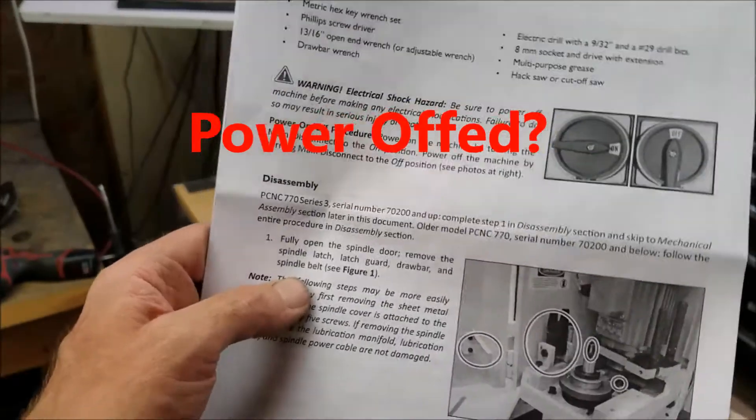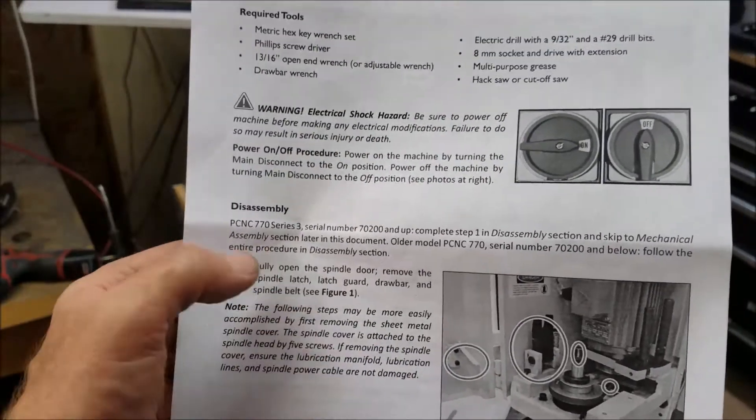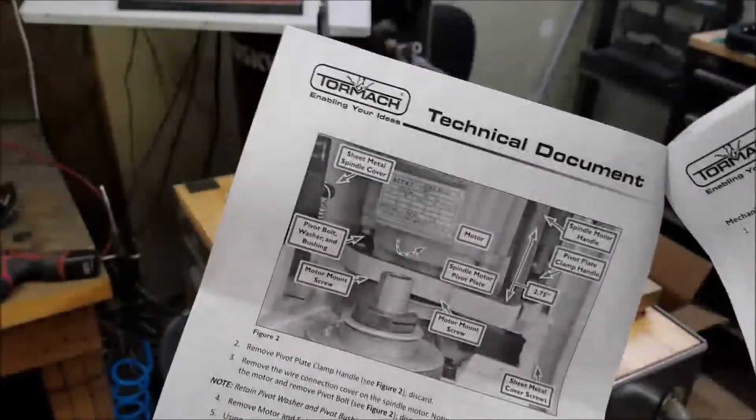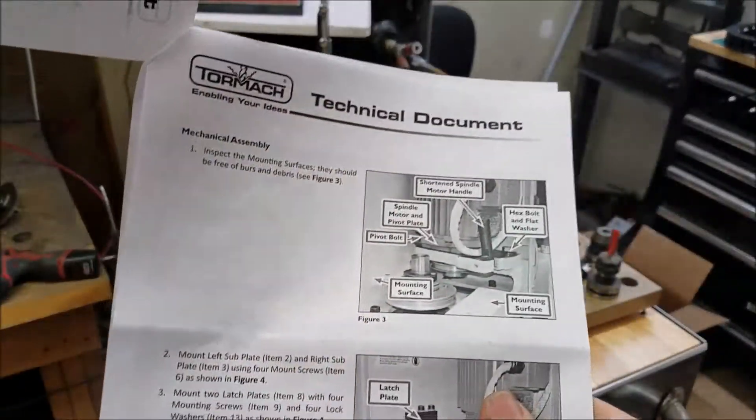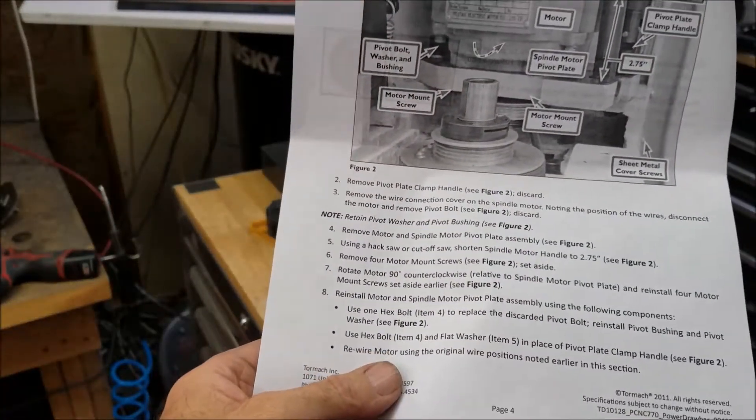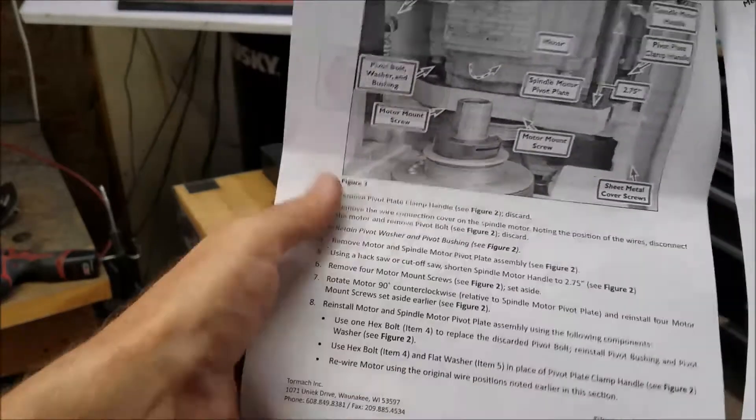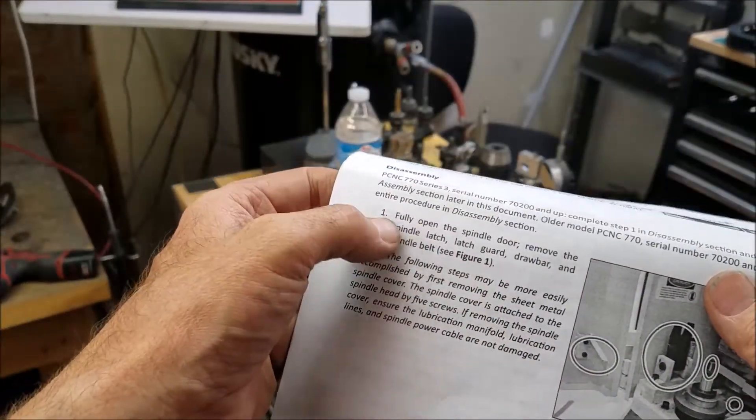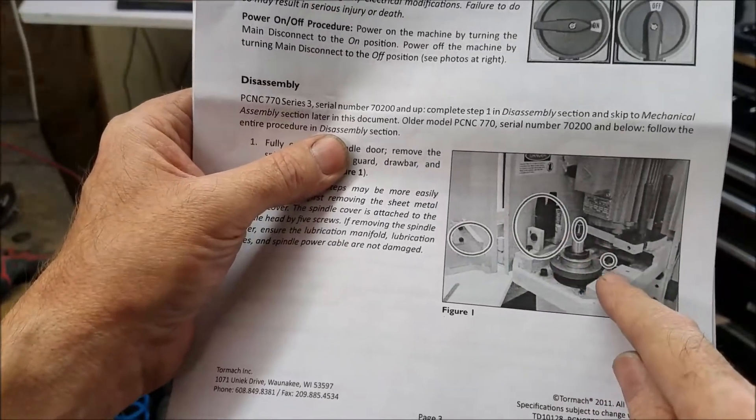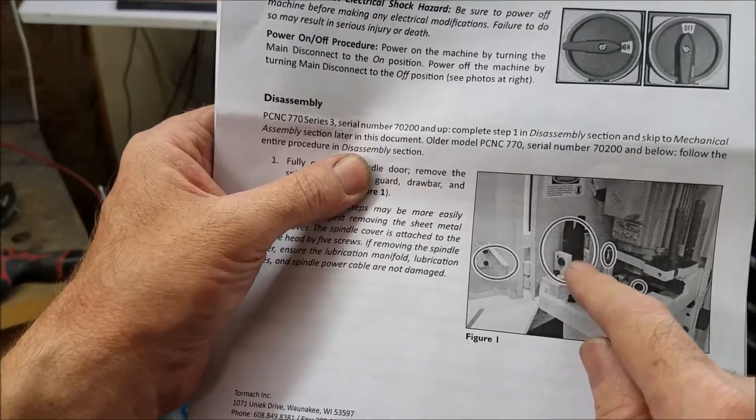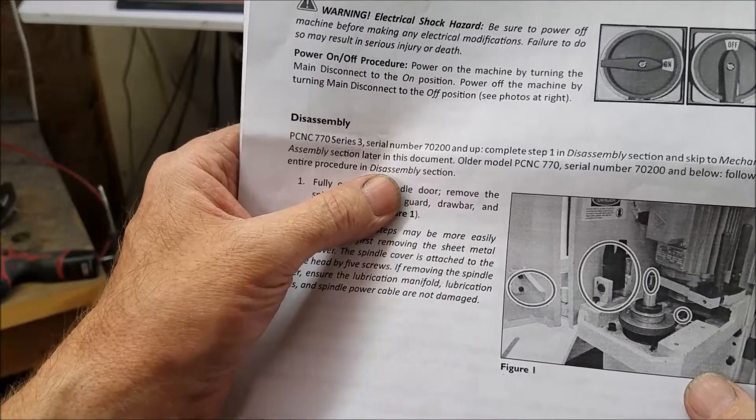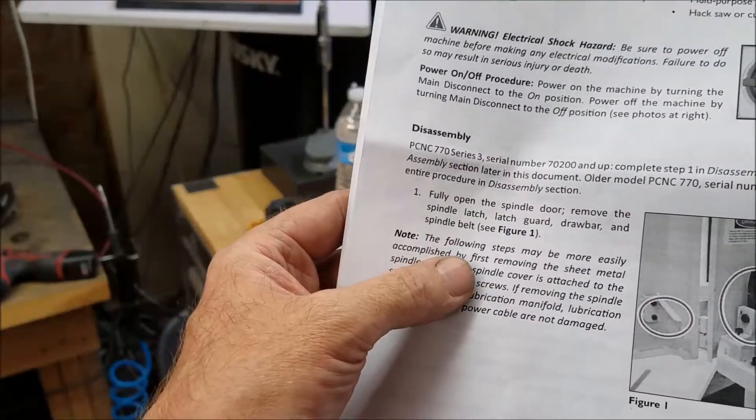If you have a newer model of the 770, all you have to do is this number one step and then skip all the other stuff on this page and go on to the mechanical assembly. If you have an older model, you have to do all this stuff here. Good thing I read that section. I'm going to start by taking out the drawbar, the belt, and all the parts pertaining to the manual tightening and loosening of the drawbar. It says it might make certain steps easier if you remove the spindle cover.